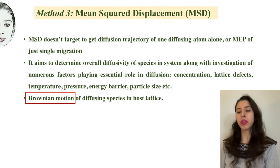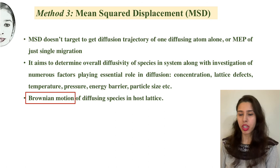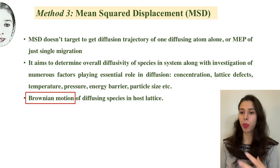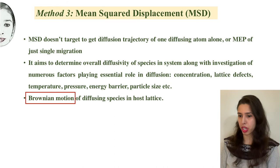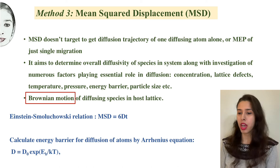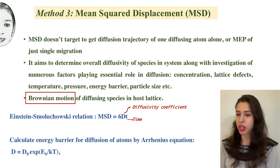The last method, Mean Square Displacement, MSD, is the easiest of all. It does not really target to get the diffusion trajectory of one atom alone — it just aims to determine the overall diffusivity of species in the system. The entire system is allowed to undergo Brownian motion, which is random motion, for a longer duration of time. Then the mean square displacement is calculated for each time step and related to the diffusivity coefficient by the Einstein-Smoluchowski relation.